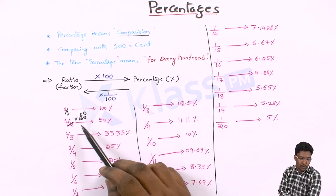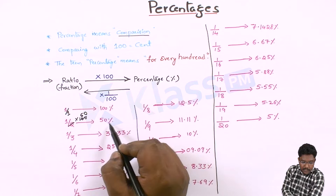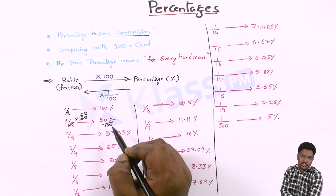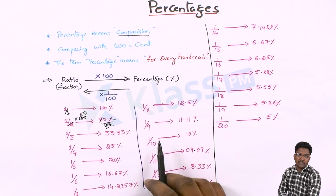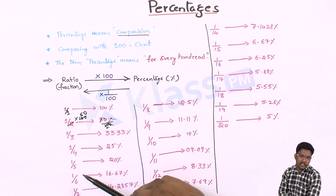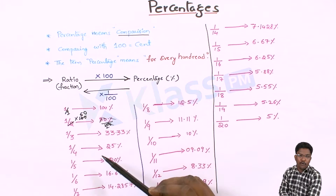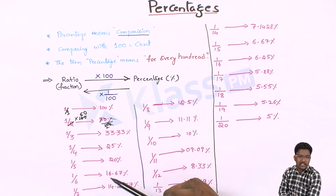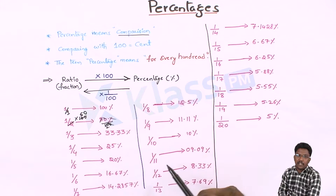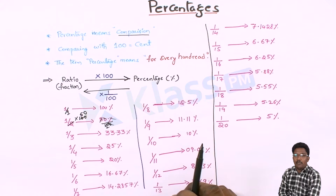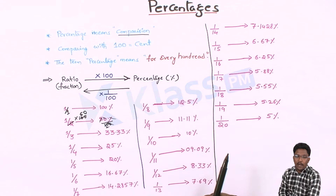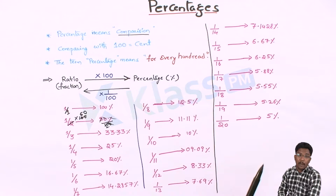1/1 means 100%, 1/2 means 50%, 1/3 means 33.33%, 1/4 means 25%, 1/5 means 20%, 1/6 means 16.67%, 1/7 means 14.2857%, 1/8 means 12.5%, 1/9 means 11.11%, 1/12 means 8.33%, 1/13 means 7.16%. You have to remember these values up to 1/20.